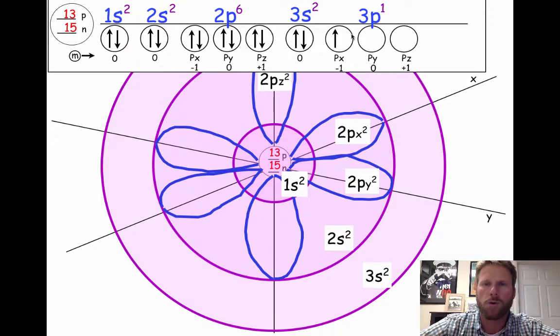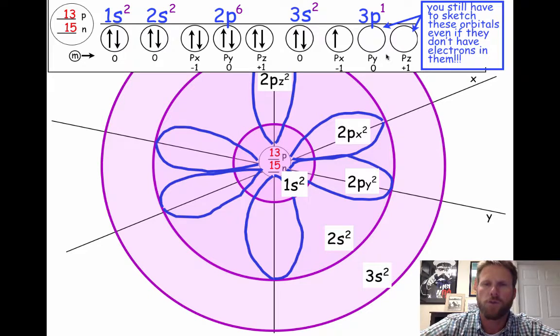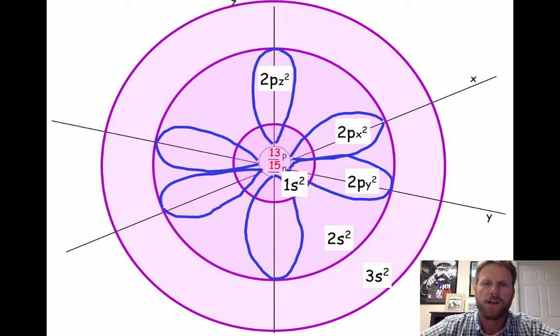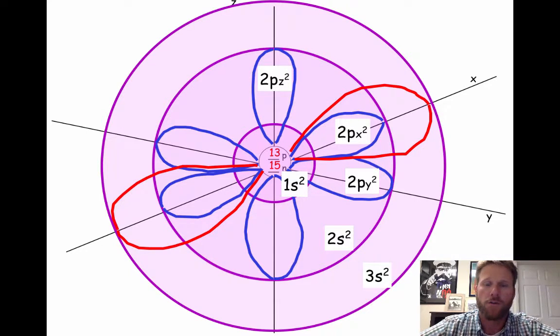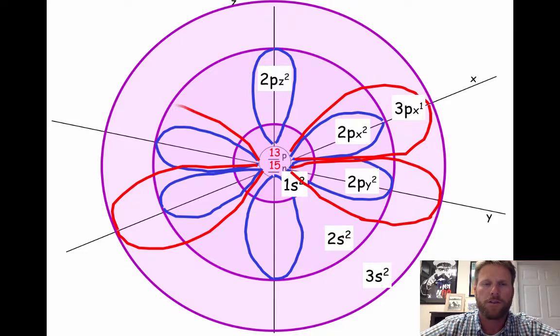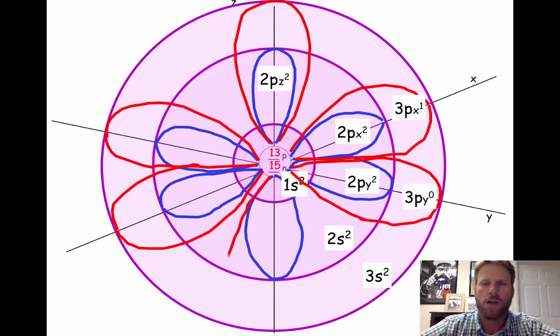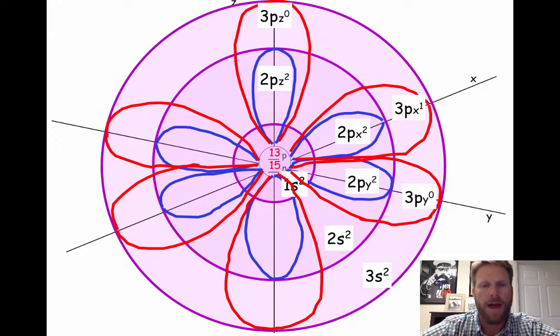Now we have to draw the p orbitals for the third energy level. So even though we are not filling two of those orbitals, we still have to draw them. If you have a p orbital, you have all three lobes. Even if they're empty, they're still there. Those probability regions still exist. So the 3p orbitals have to be drawn out as far as 3s was. So the first one here we'll label 3px1, and then the 3py and the 3pz will both be labeled with zeros, so 3py0 and 3pz0. And that is the quantum model for an aluminum atom.